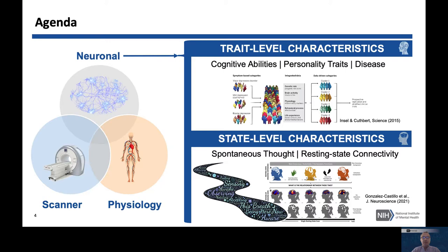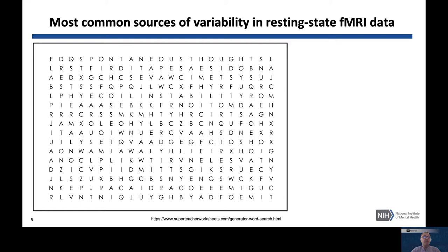For the first part, I thought it would be interesting to play a little game together, in which we try to find in this word search all the different sources of variability that may contribute to our fMRI data. I'm going to help, so don't worry — I'm not asking you to just go there and come back in 20 minutes.